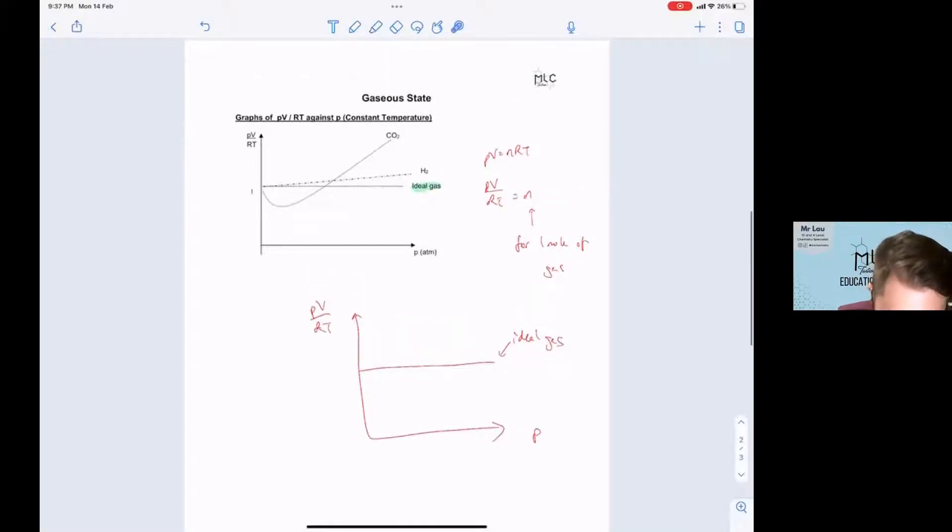Now what you are looking out for is the deviation from ideal behavior. So when it goes either below or above the line, that is when it deviates from ideal behavior. And usually what we are concerned with is the part over here, the deviation over here.